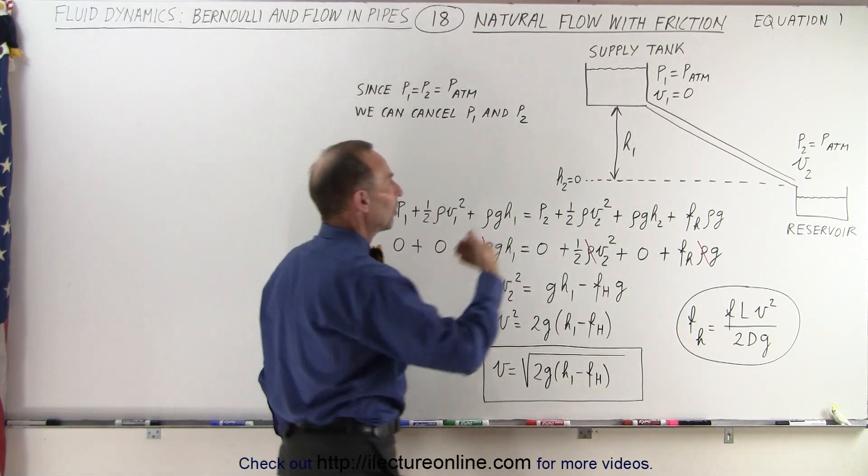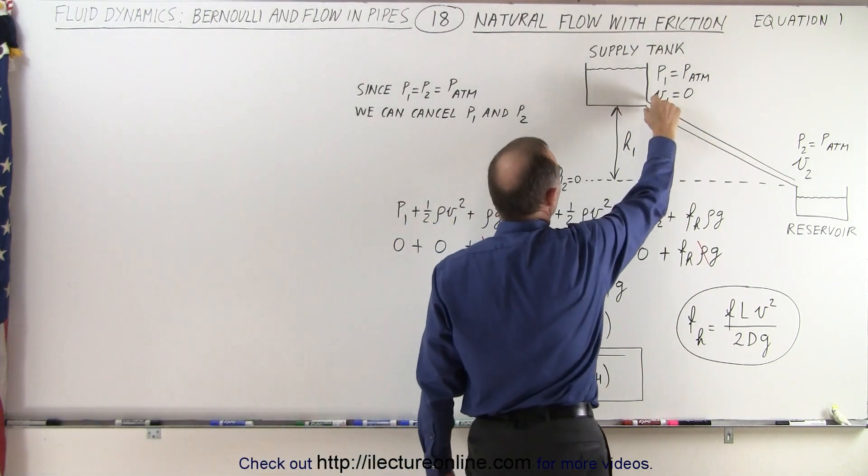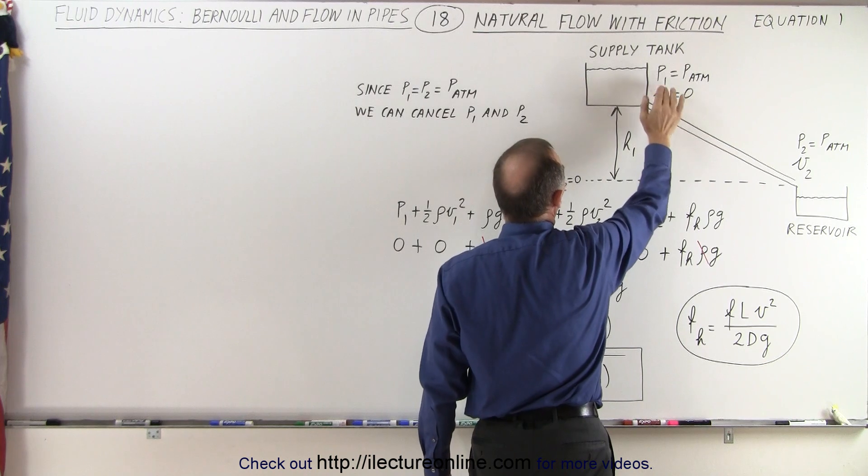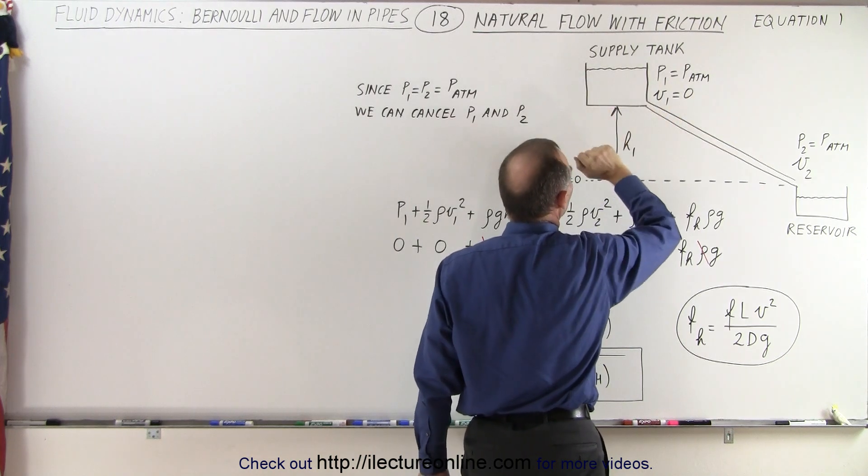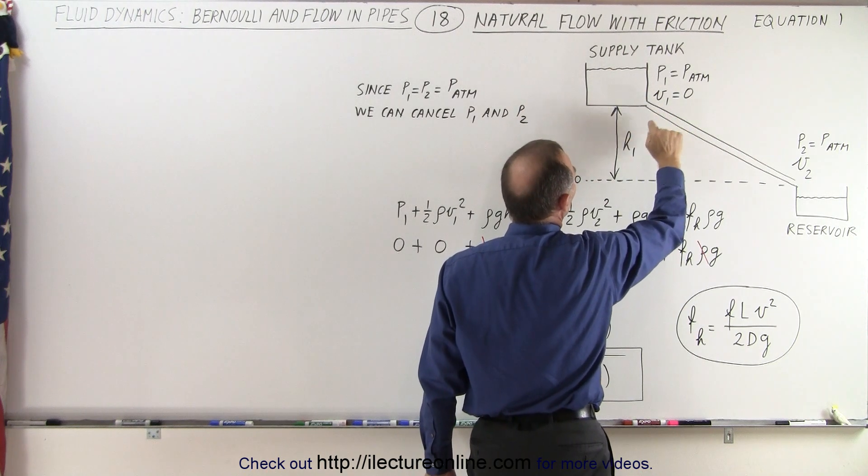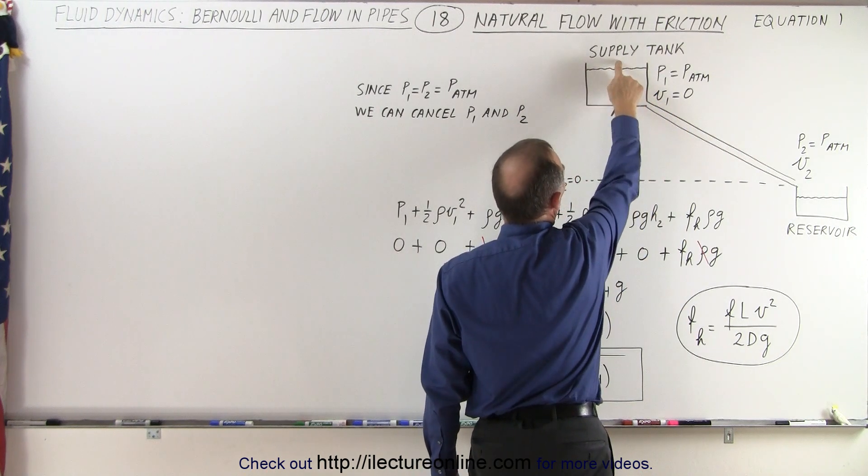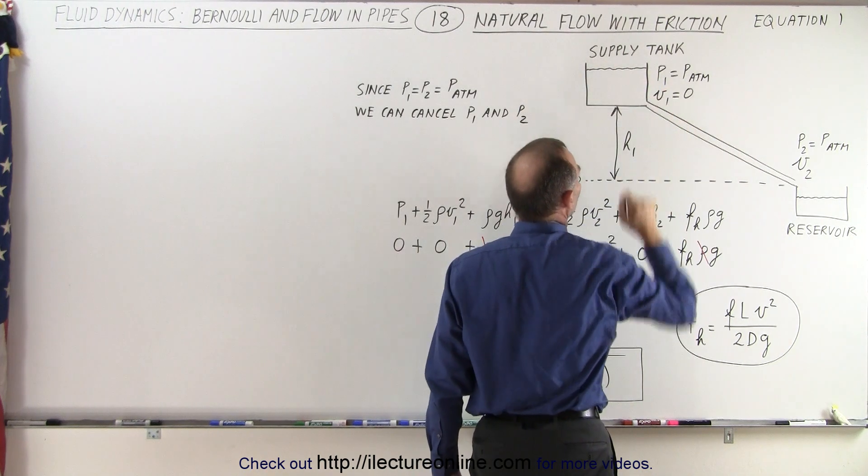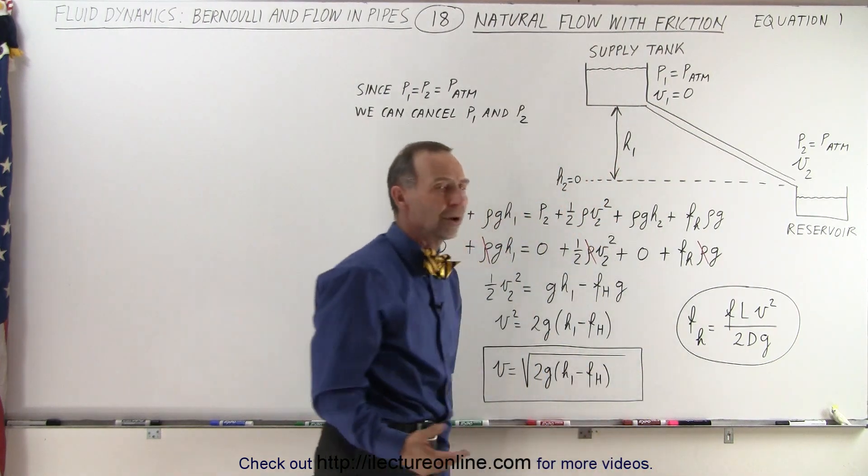Well, first of all, at the top at the supply tank, the diameter of the pipe should be relatively small compared to the size of the supply tank, in such a way that the velocity at the top starts at zero. And we can also say, since the supply tank is open to the atmosphere, that pressure 1 is equal to the atmospheric pressure.